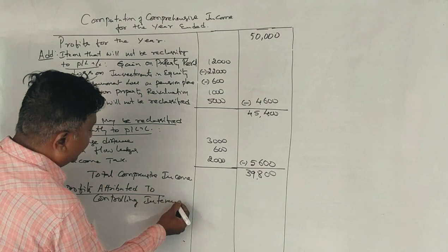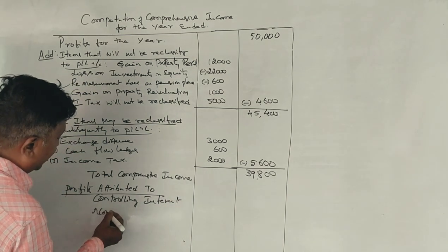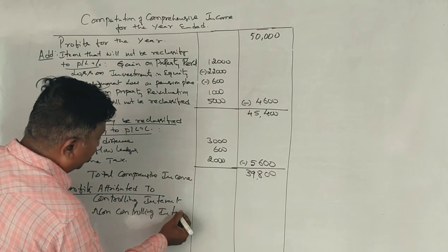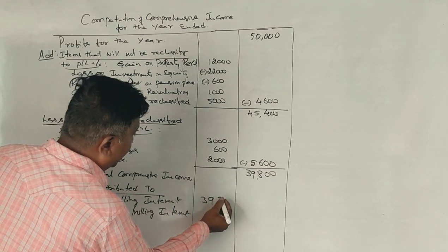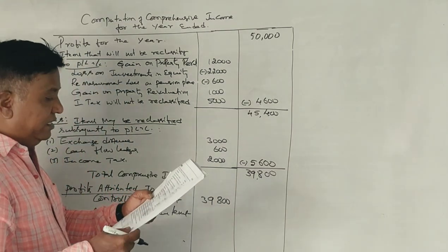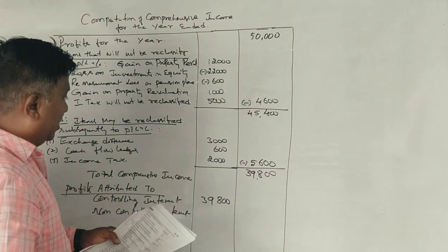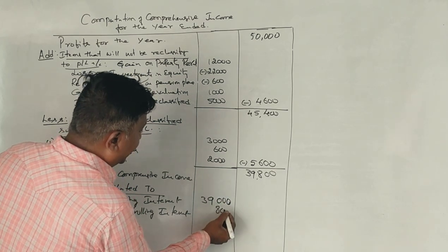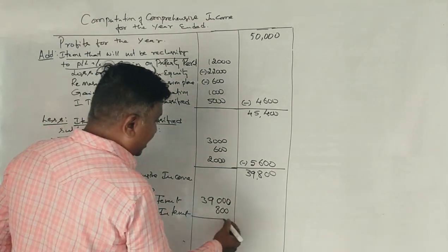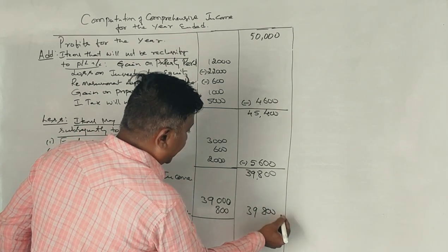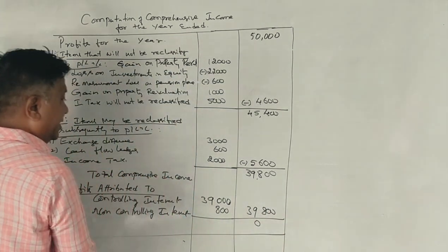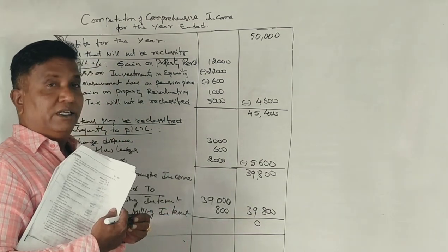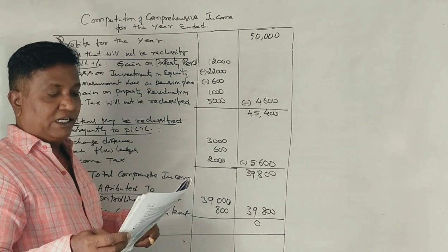Now, what is the non-controlling interest? It is 39,000. If you take 800 rupees for non-controlling interest, it becomes 39,800. The non-controlling interest portion is a majority consideration worth 7 marks.